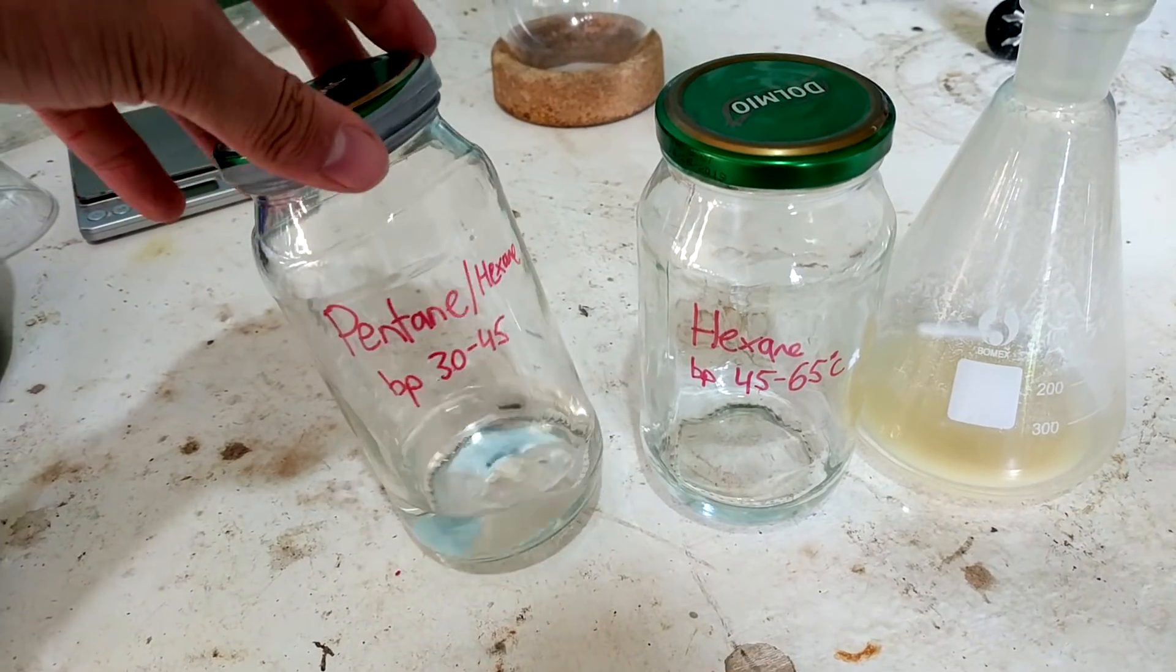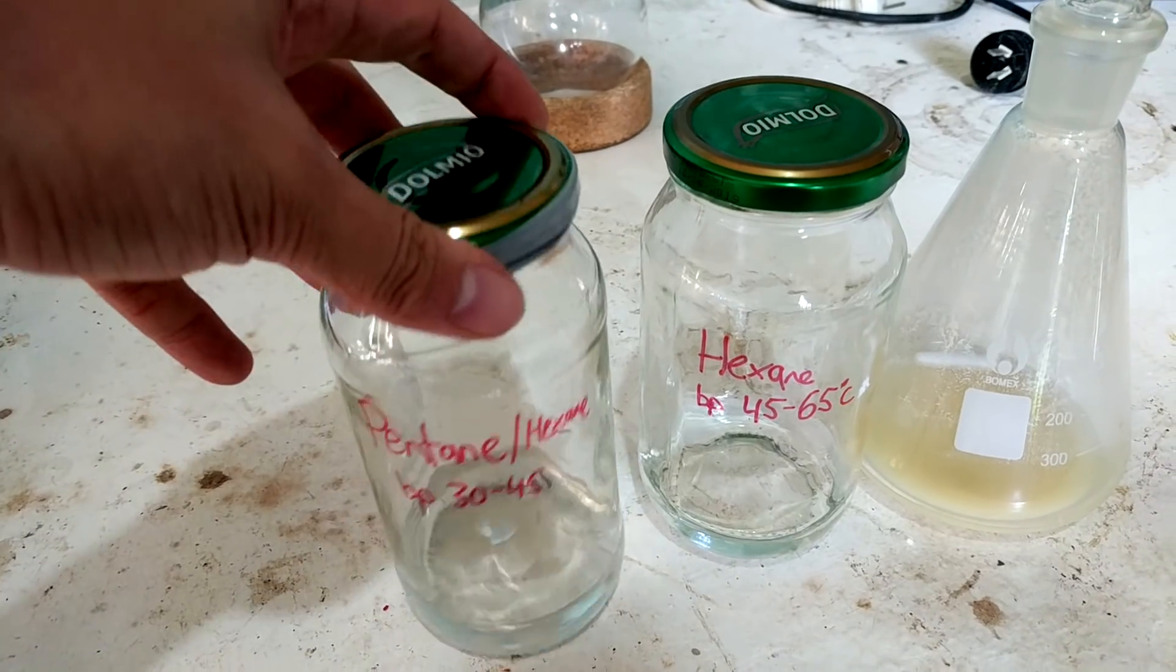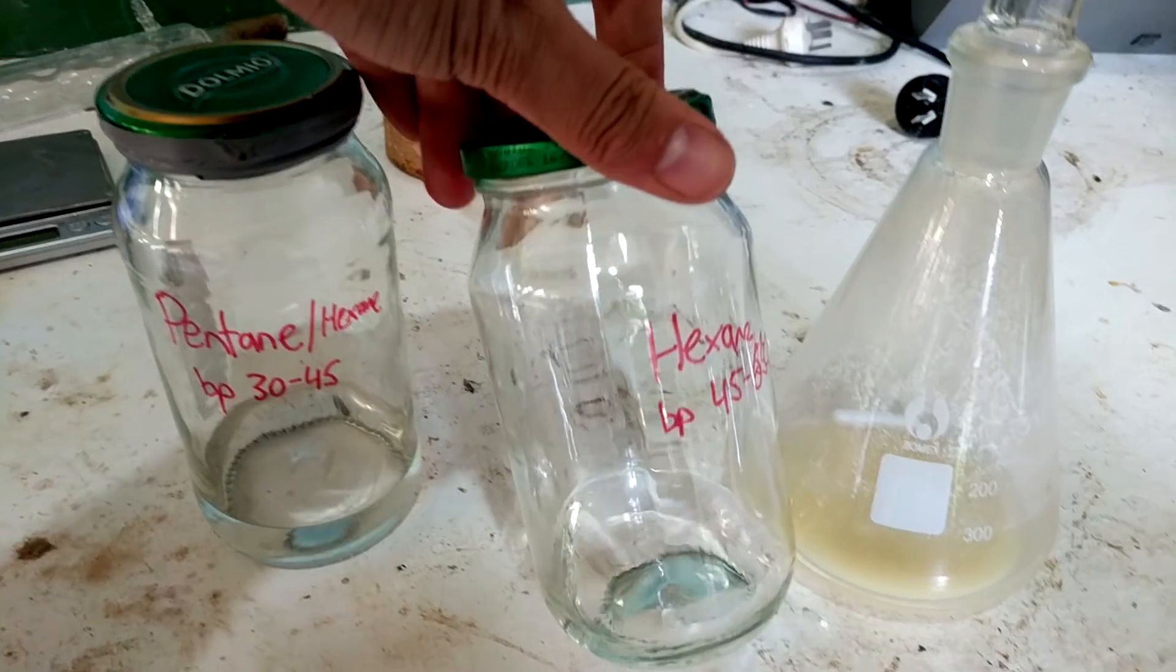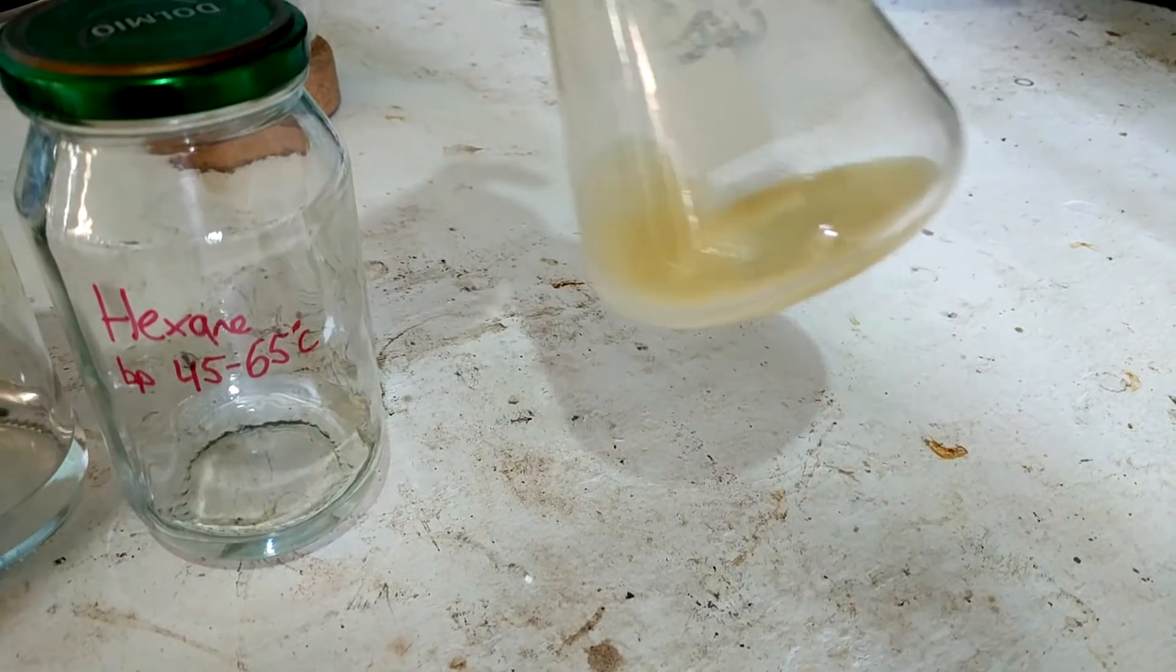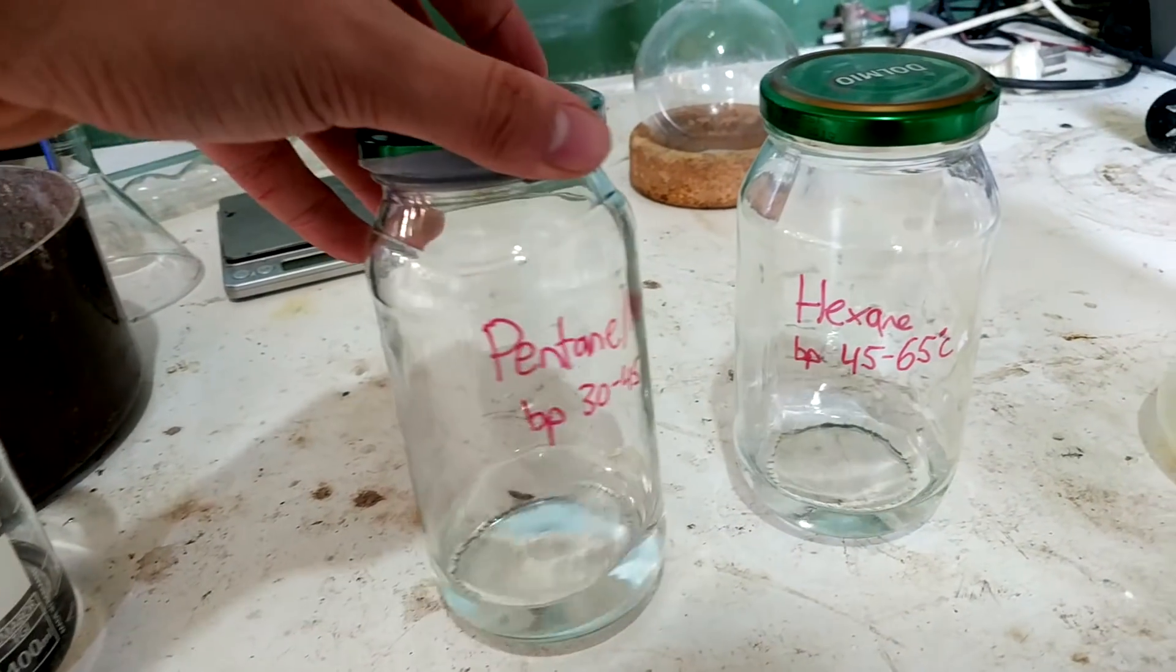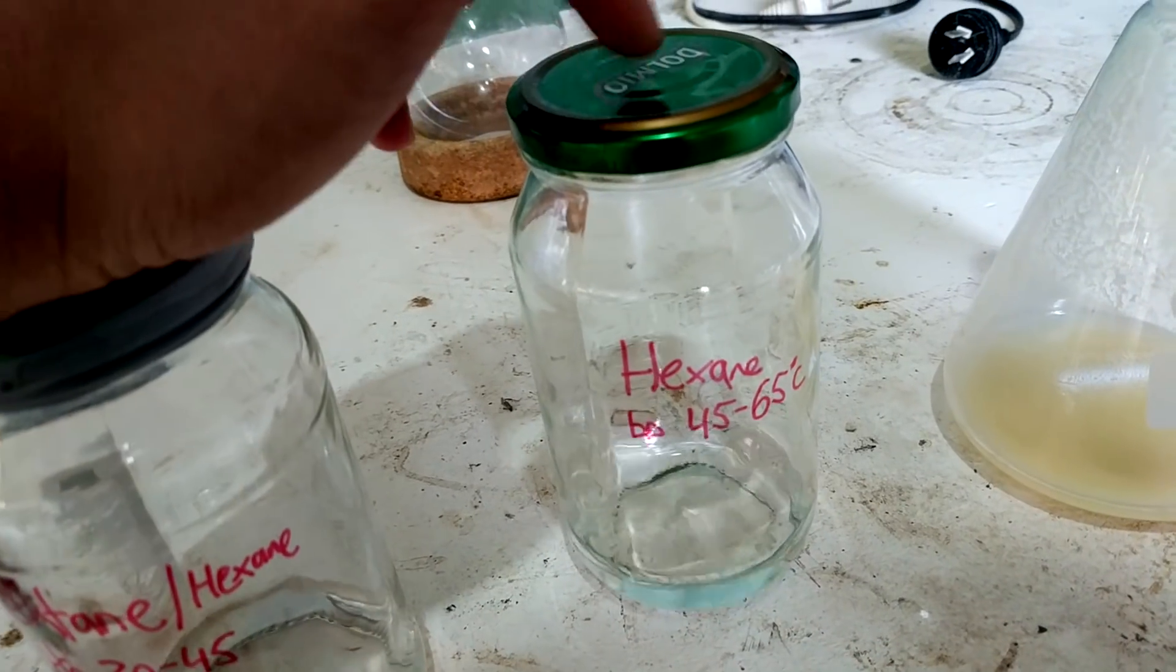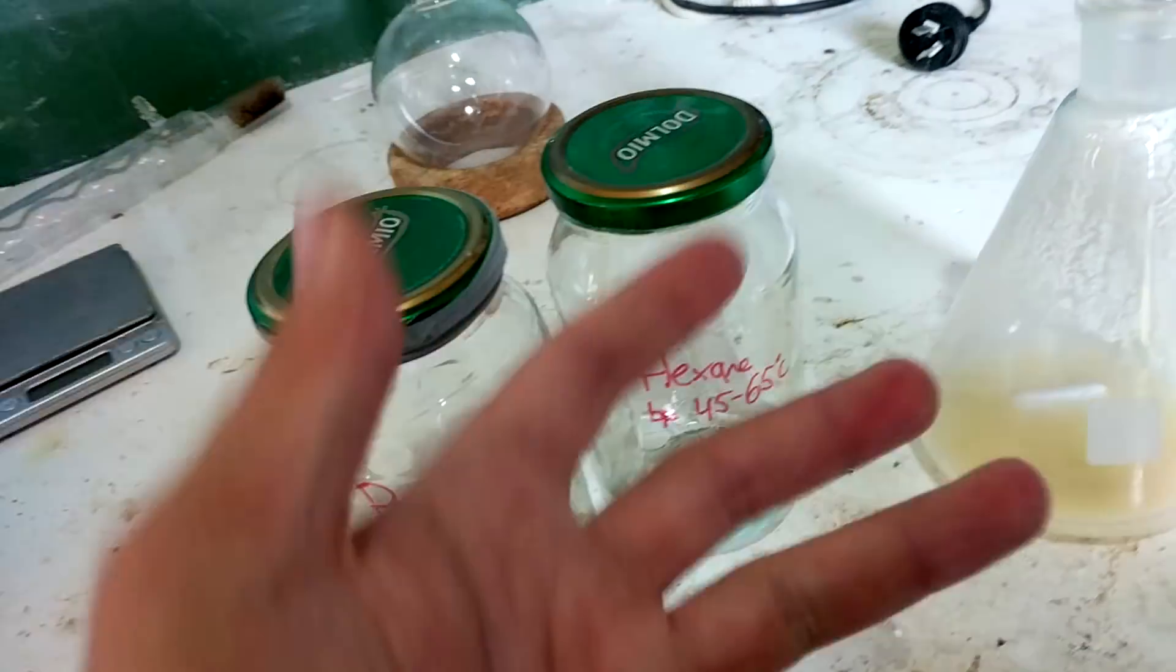Alright, and here's our final yields. I've labeled this pentane slash hexane with a boiling point of 30 to 45 degrees. There's 40 grams, which is roughly 60 mils or so. This is the hexane fraction with a boiling point of 45 to 65, which is quite a large range but it's still useful in its own right. And we have 25 grams, which is 45 mils or so. We have a bit left in the flask which I just didn't distill over. You can see just how yellow that got. So no we didn't get a whole lot seeing as we started with 700 mils.